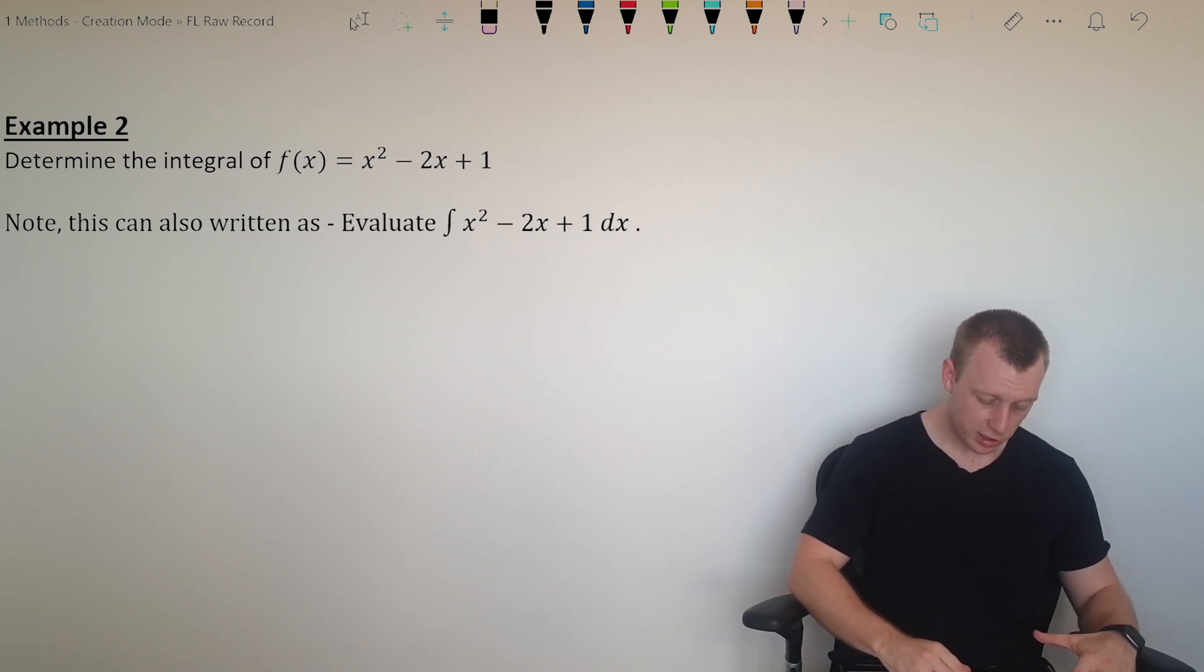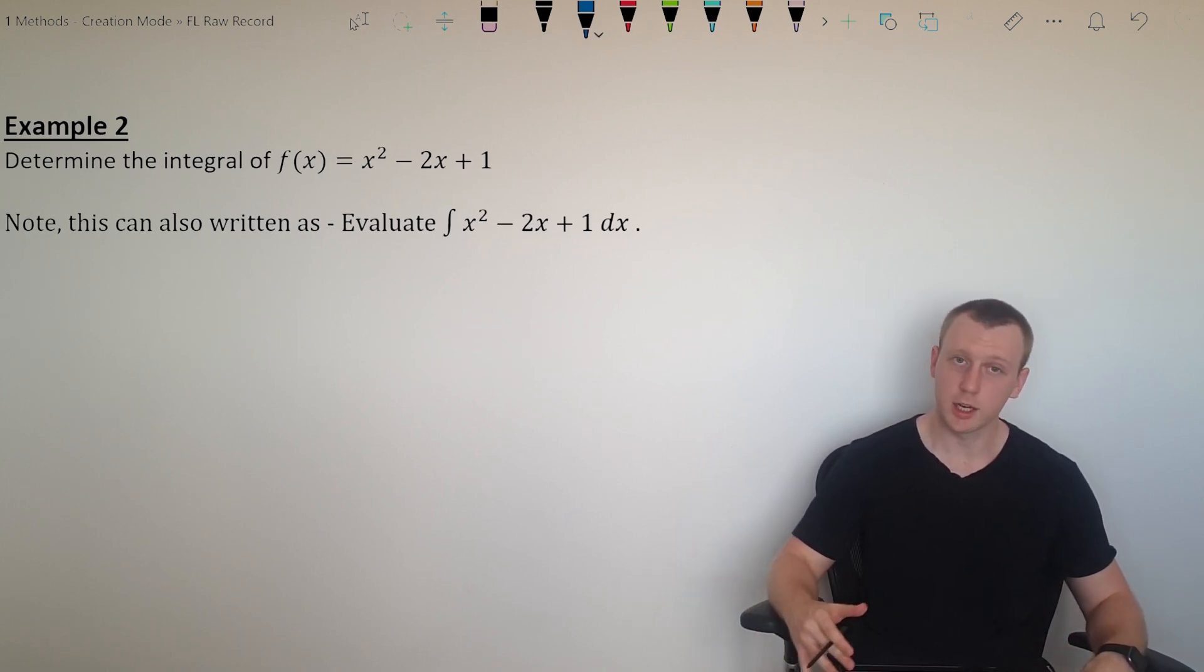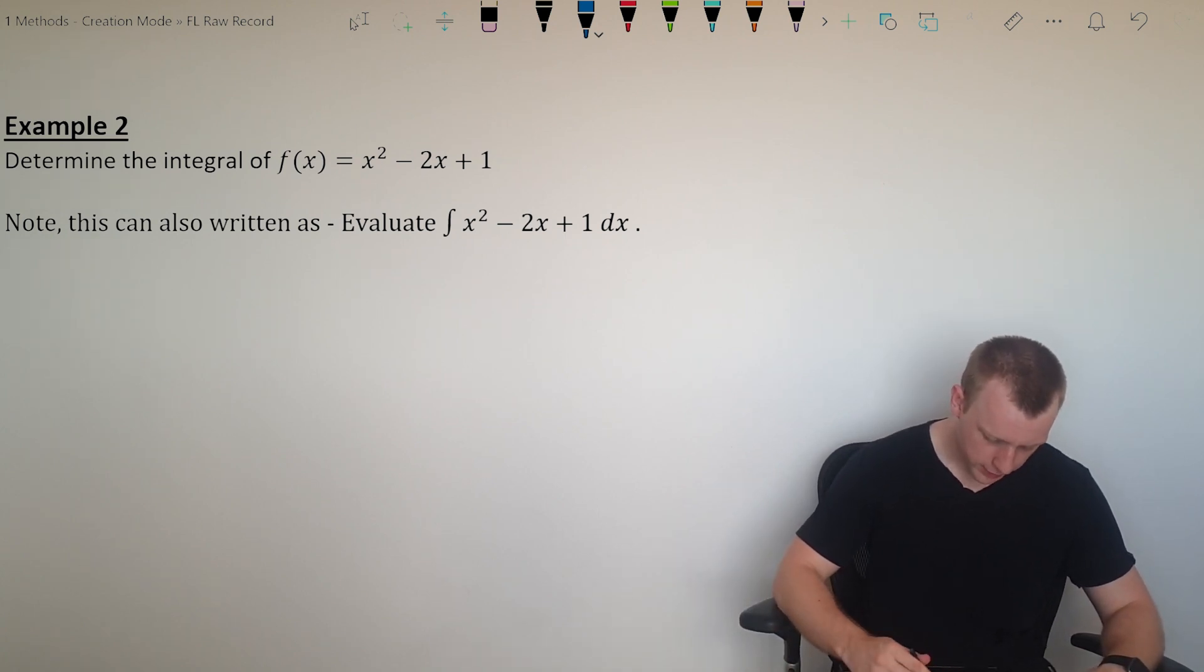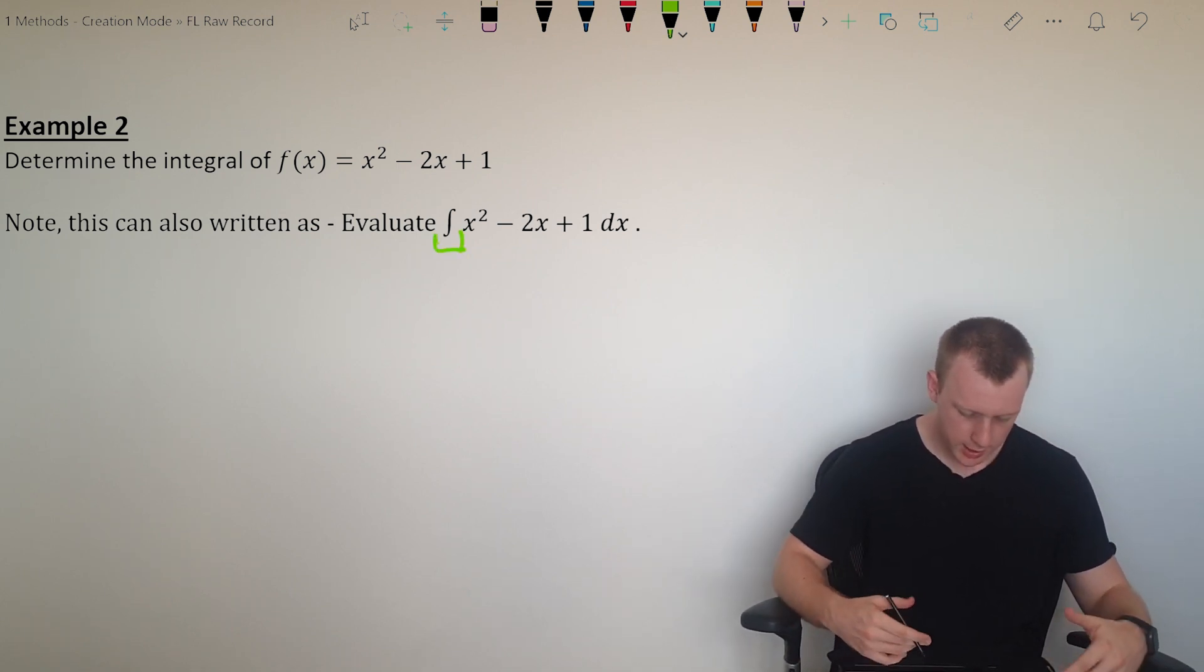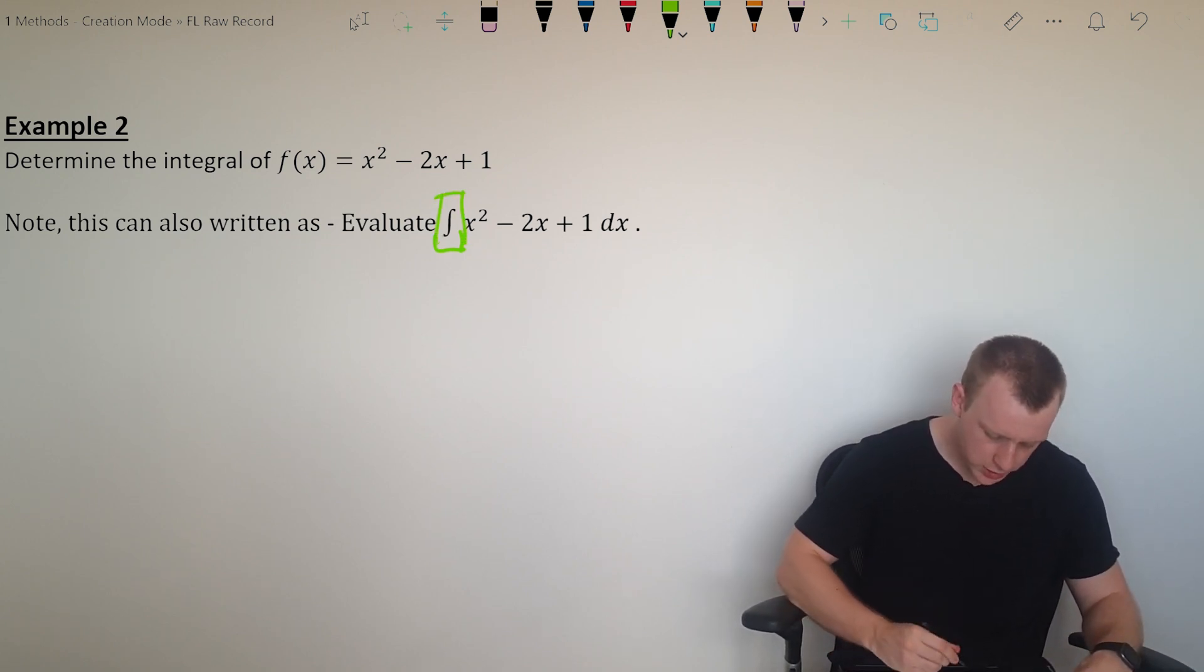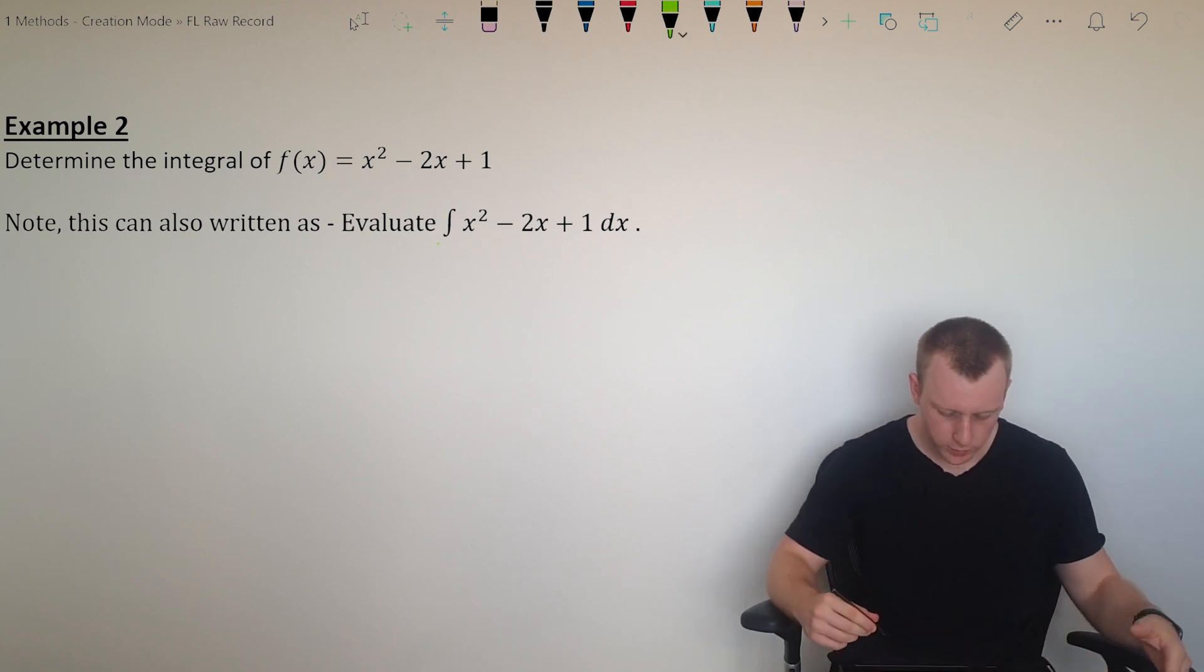Second example, a little bit tougher, just a polynomial. I encourage you to, if you want, you can pause this and try and find the integral of this function. So I'm going to go on and assume you've paused and had a crack. So I just want to note, we can also write it as evaluate, and this little symbol here, it's kind of like an s. We'll get into it. It's just the integral. So you can see evaluate the integral of the function.